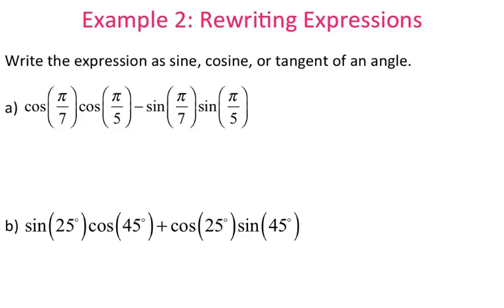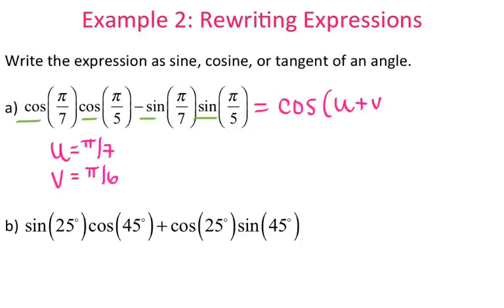Now we're rewriting expressions. I'm giving you a fully expanded expression and we want to condense it. You really need to pay attention to how your formulas are structured, and then decide which formula you are going to use. If I look at my two angles, I have u is pi over 7 and v is pi over 6. Looking at the expression, I have cosine cosine minus sine sine. Looking at my formula sheet under sum and difference formulas, cosine cosine minus sine sine equals cosine of u plus v. My u is pi over 7 and my v is pi over 5.